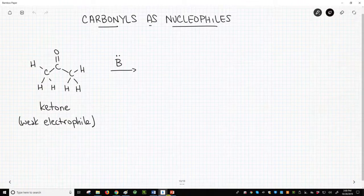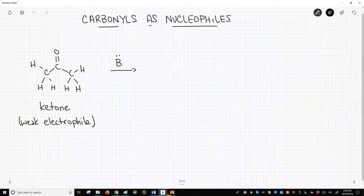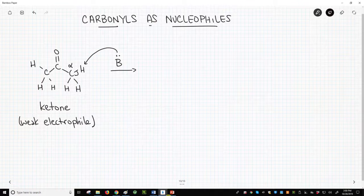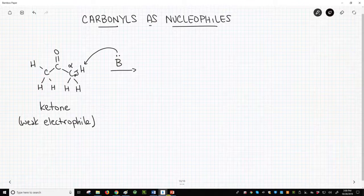Well, they can't by themselves, but they can with the help of a base. If a carbonyl has a hydrogen on a next-door carbon, people call this the alpha carbon, then a strong enough base can remove this hydrogen to make a very special type of carbanion.